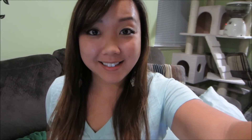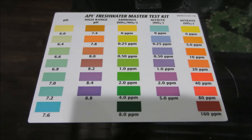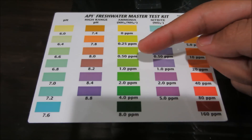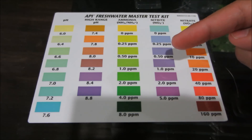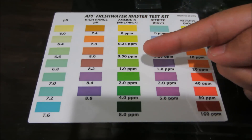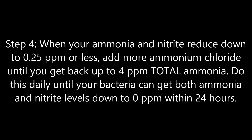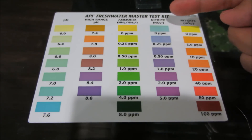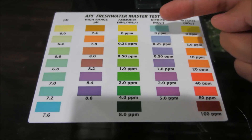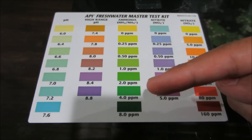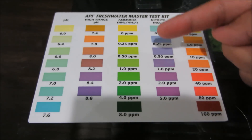And now the wait begins. You're going to want to test your water every two days until your ammonia and your nitrite levels hit 0.5 parts per million. Once it gets there or less than that, you're going to add more ammonia until it gets back up to four parts per million. Then you'll measure the water every day. Once your ammonia and nitrite levels get down to 0.25 parts per million each or less, you're going to add more ammonia until it gets to four parts per million, and you're going to maintain it at that level every day until your tank can complete the entire cycle within 24 hours.